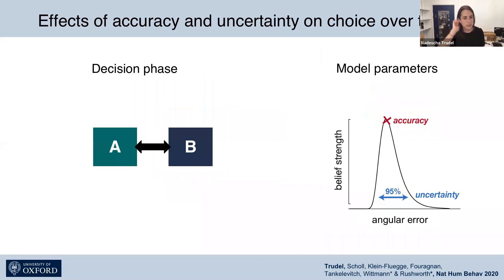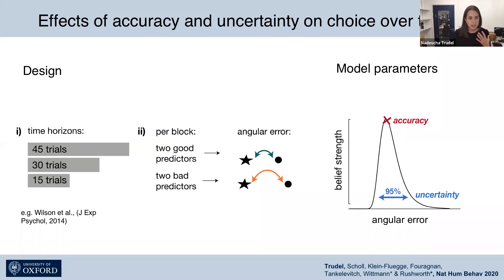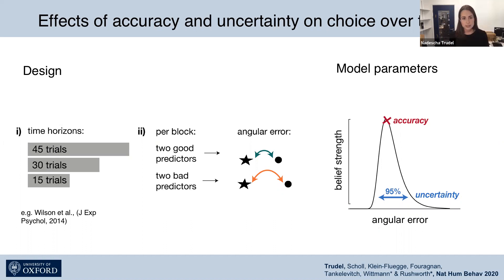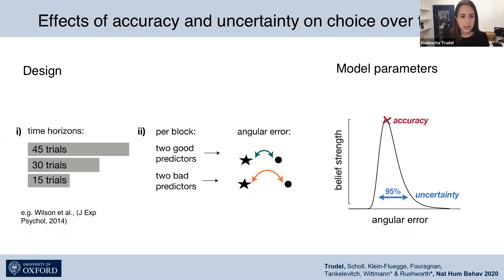We wondered how participants make selections between predictors according to their beliefs of accuracy and uncertainty. Before showing results, I want to note some design details. Participants transitioned through multiple blocks with different lengths, defining so-called time horizons. They would sometimes be in a long time horizon — for example, 45 trials — and sometimes in shorter ones, such as 15 trials. In each block, participants encountered four predictors: two good predictors with small average angular error, and two bad predictors with bigger average angular error. Each block presented a new set of predictors, so participants had to continuously learn which predictor was good.